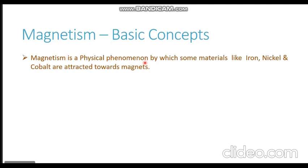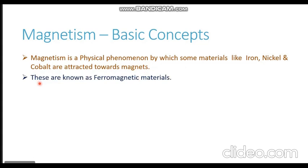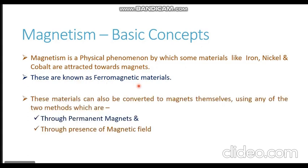Magnetism is a physical phenomenon by which some materials like iron, nickel, and cobalt are attracted towards magnets. These materials which are attracted towards a magnet are also known as ferromagnetic materials. These materials can also be converted into magnets themselves. There are two techniques or methods available to convert a ferromagnetic material into a magnet.